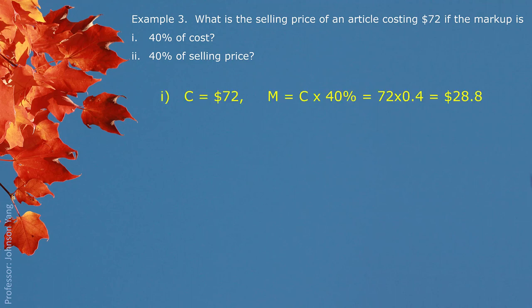We have the information: cost of buying $72, and the markup 40% of the cost. We can finish the calculation since we have the cost $72, so gives us the markup $28.80. Put them together, we have $100.80 as the selling price.